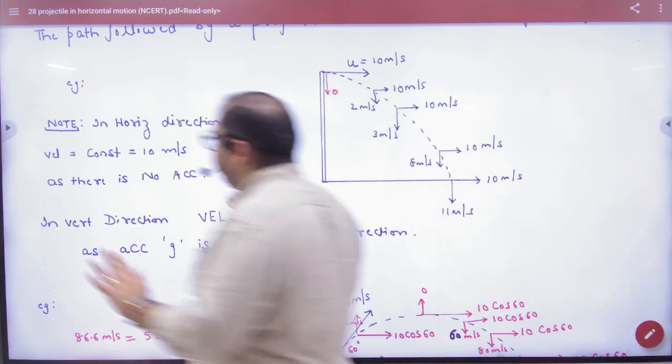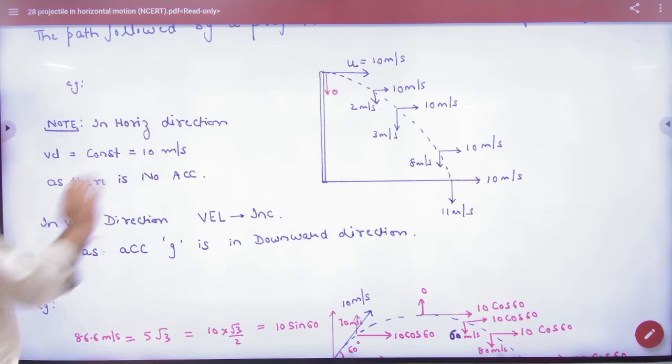I have written here - in horizontal direction, velocity is 10, no acceleration. In vertical direction, acceleration is g. This was done.